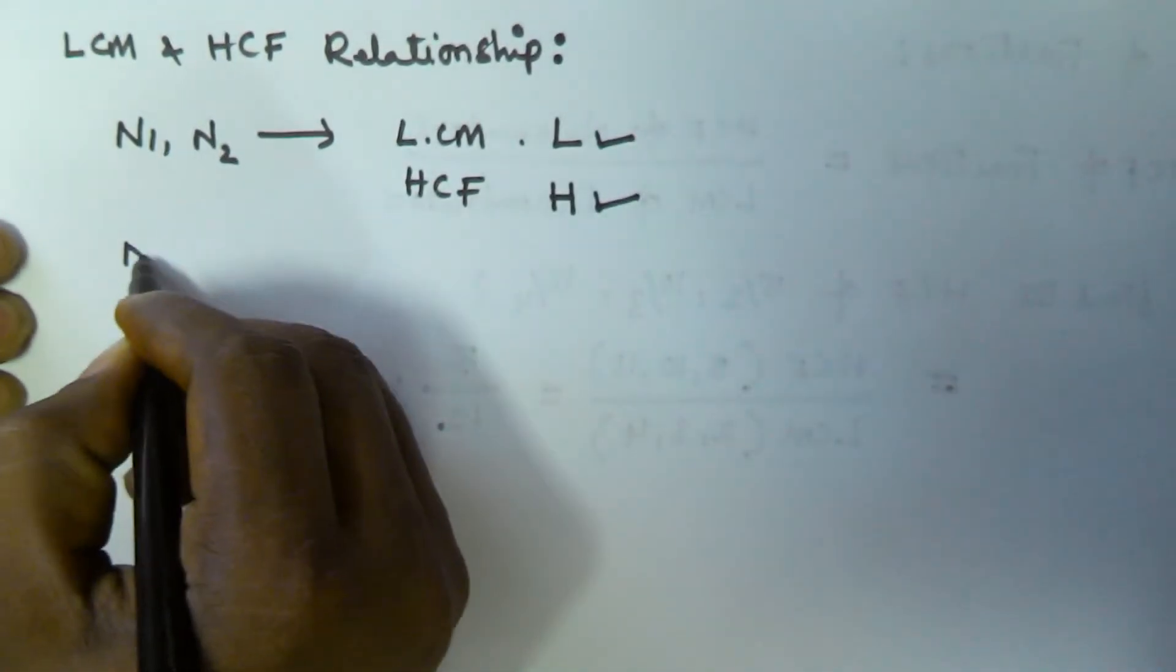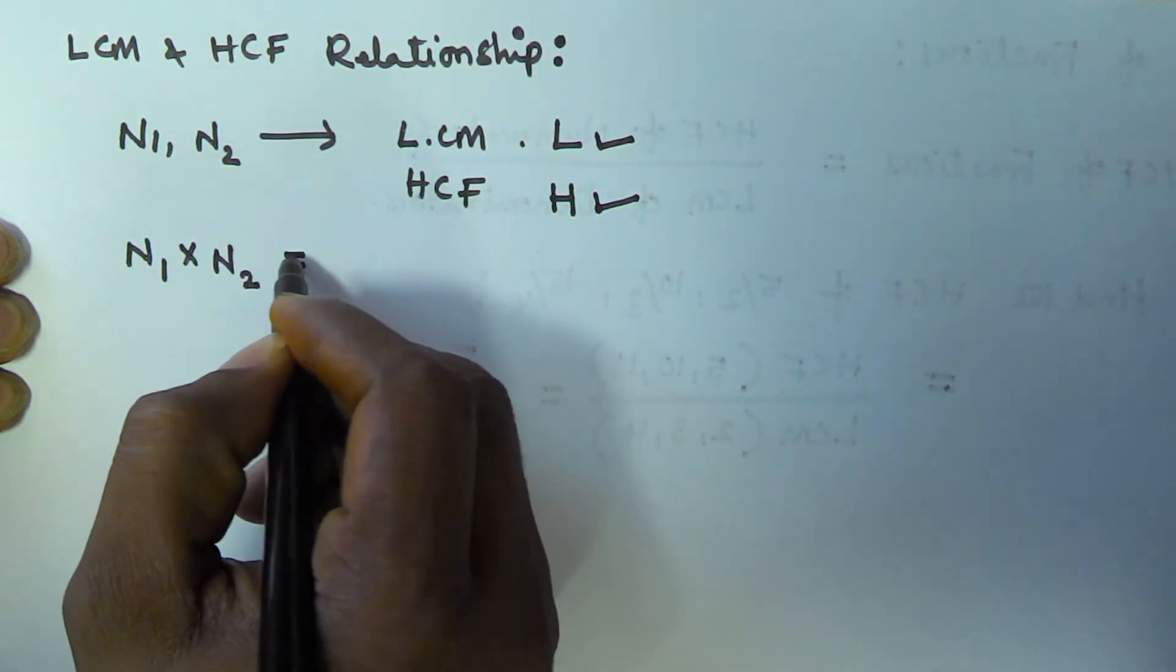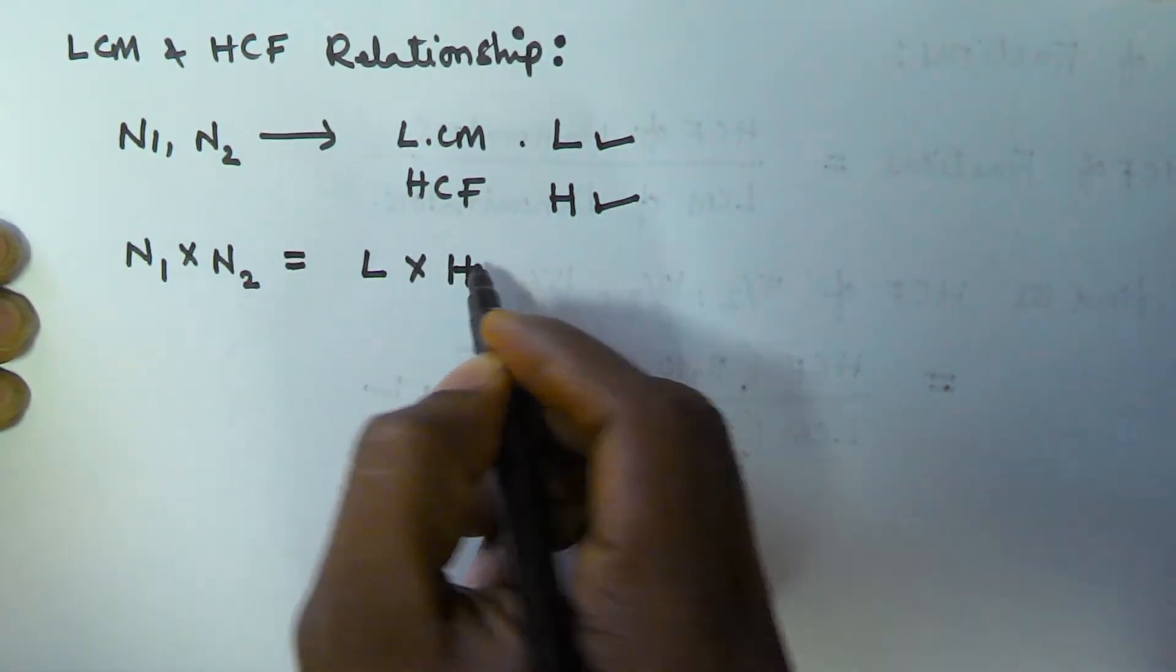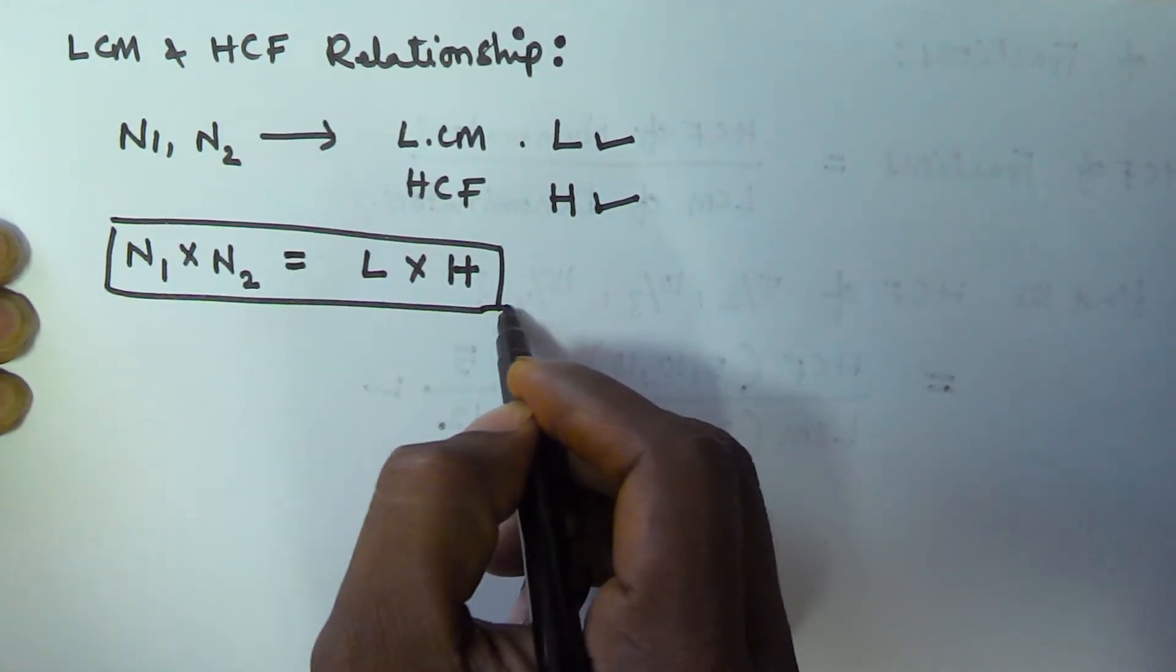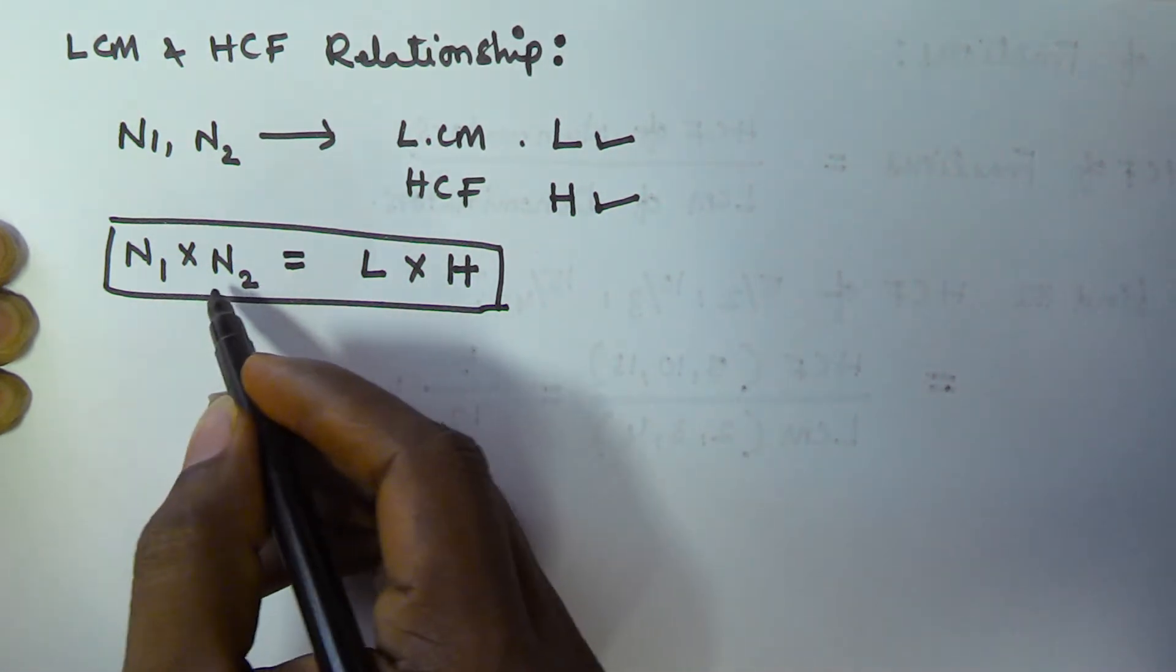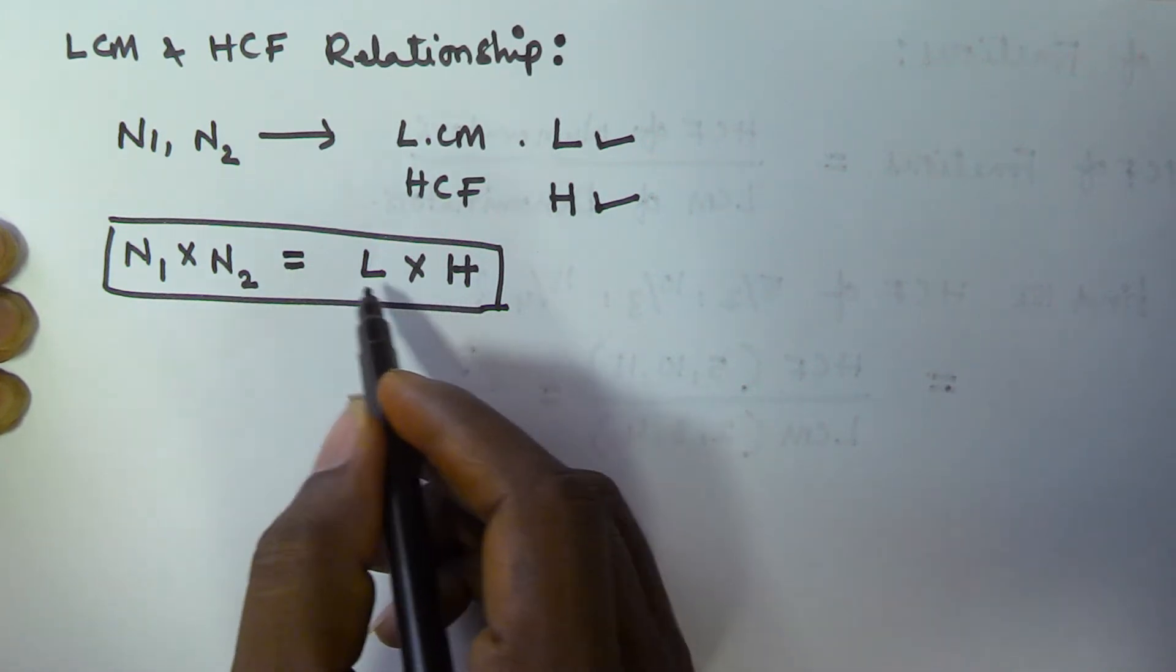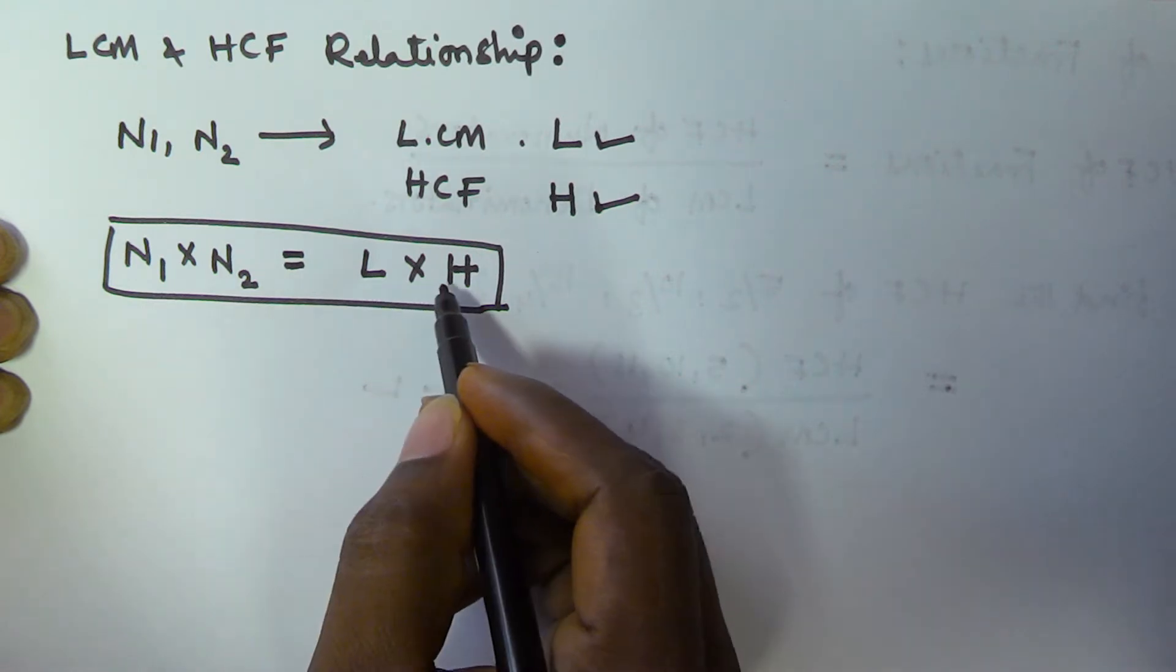The multiplication of given two numbers is equivalent to the multiplication of LCM and HCF. If two numbers are given N1 and N2, the LCM of those two numbers is L and HCF of those two numbers is H, then the relationship between LCM and HCF is: the multiplication of LCM and HCF is going to be equal to the multiplication of those two numbers.